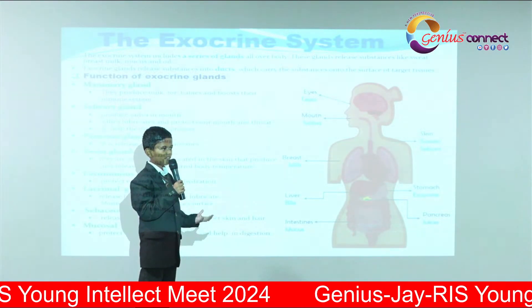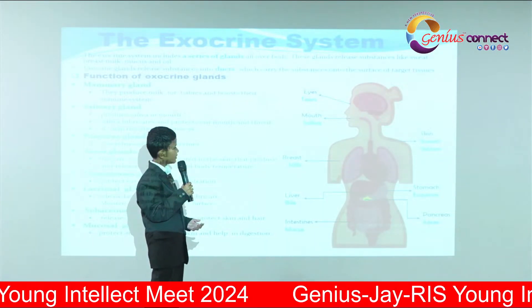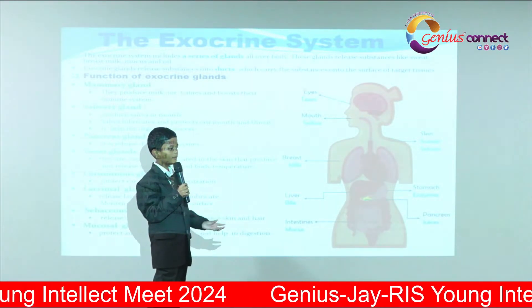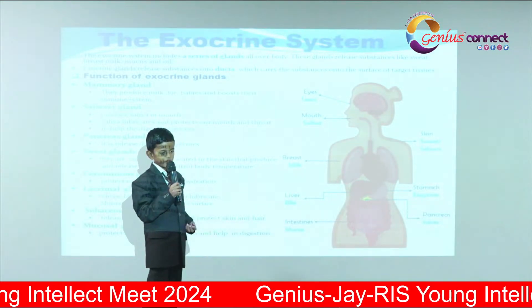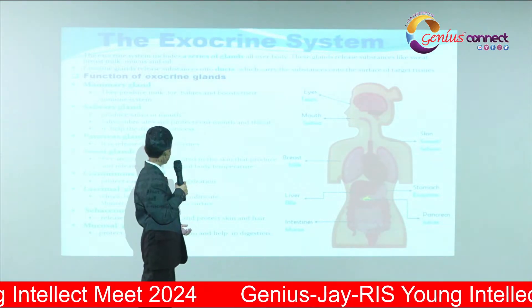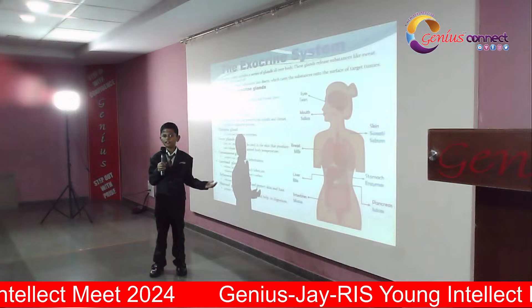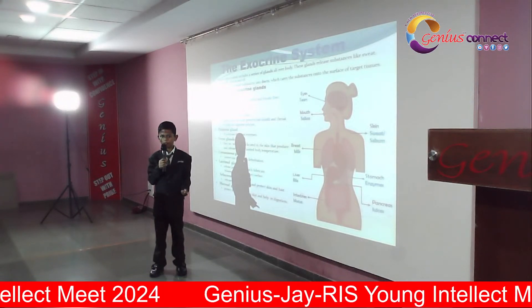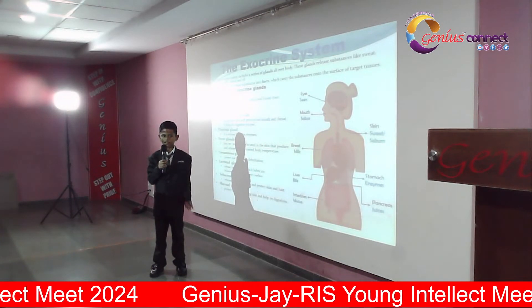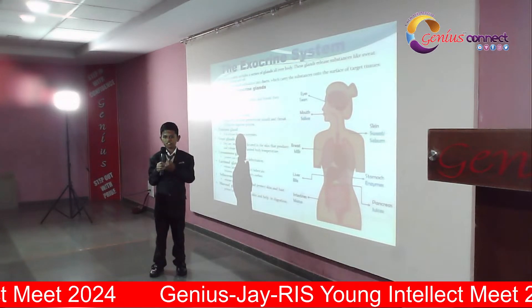Functions of the exocrine glands: Mammary glands produce milk for babies and boost their immune system. Salivary glands produce saliva in many glands in the mouth, which helps in the process of digestion.